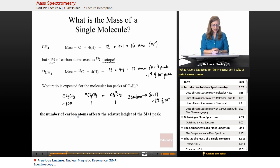Okay. So the take home message is that the number of carbon atoms affects the relative height of the M plus one peak. It's usually very small, but it is going to be there. Okay. Thank you.